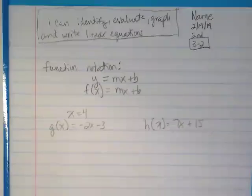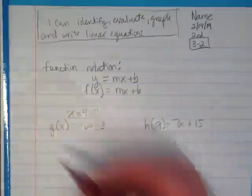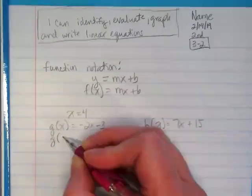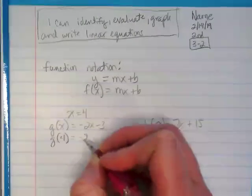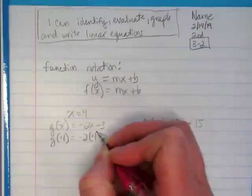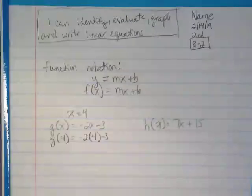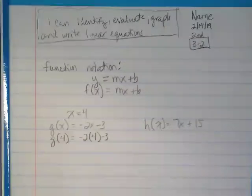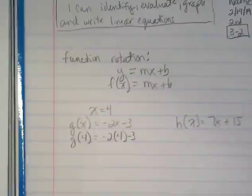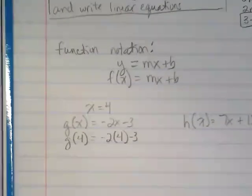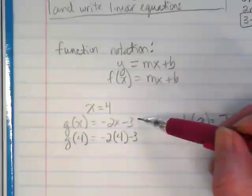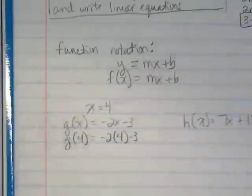We're going to make our input 4 for both of these. So we're going to rewrite this as g of 4 equals negative 2 times 4 minus 3. I'd like you to turn and talk at your table briefly. What did we do with the x's in this equation when we changed it to this equation?